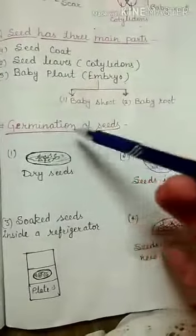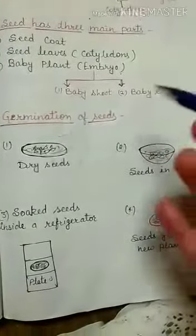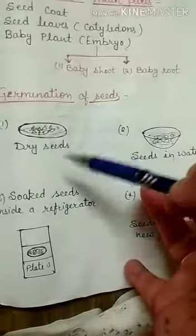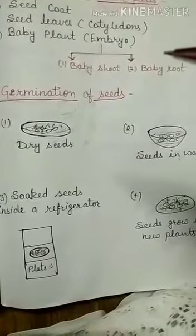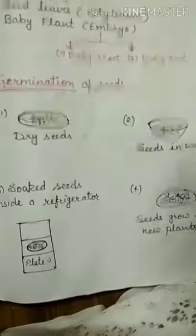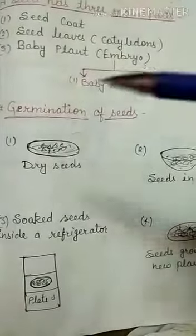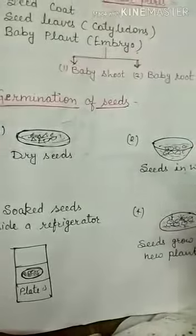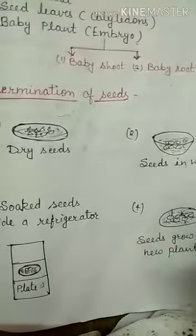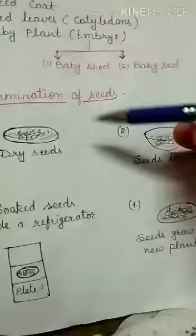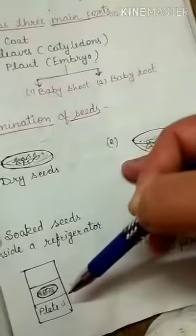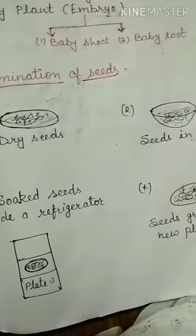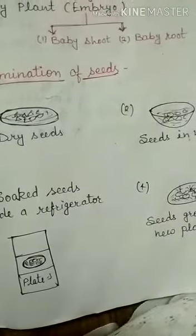Next is germination of seeds. First condition: put some dry gram or bean seeds in a plate and keep it on a window sill where it can get enough air and sunlight. Put some soaked seeds in a bowl and cover them with water. Put some soaked seeds in a plate and keep it inside a refrigerator. Put some soaked seeds on moist cotton in a plate and keep it on a window sill, keeping the cotton moist at all times.